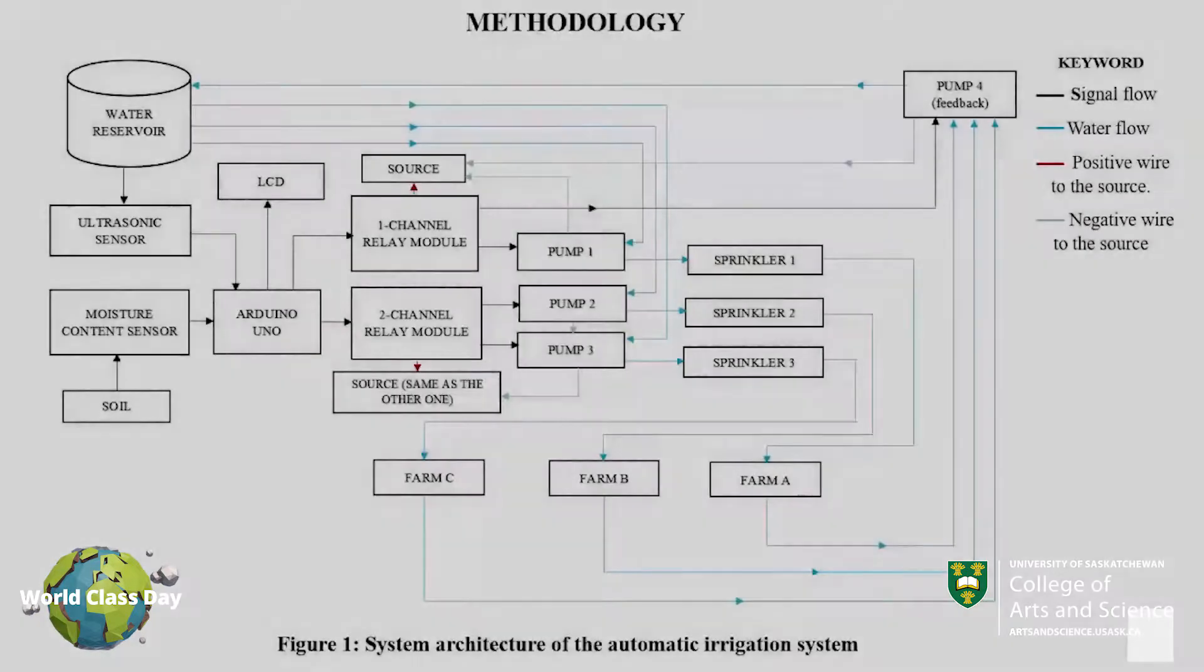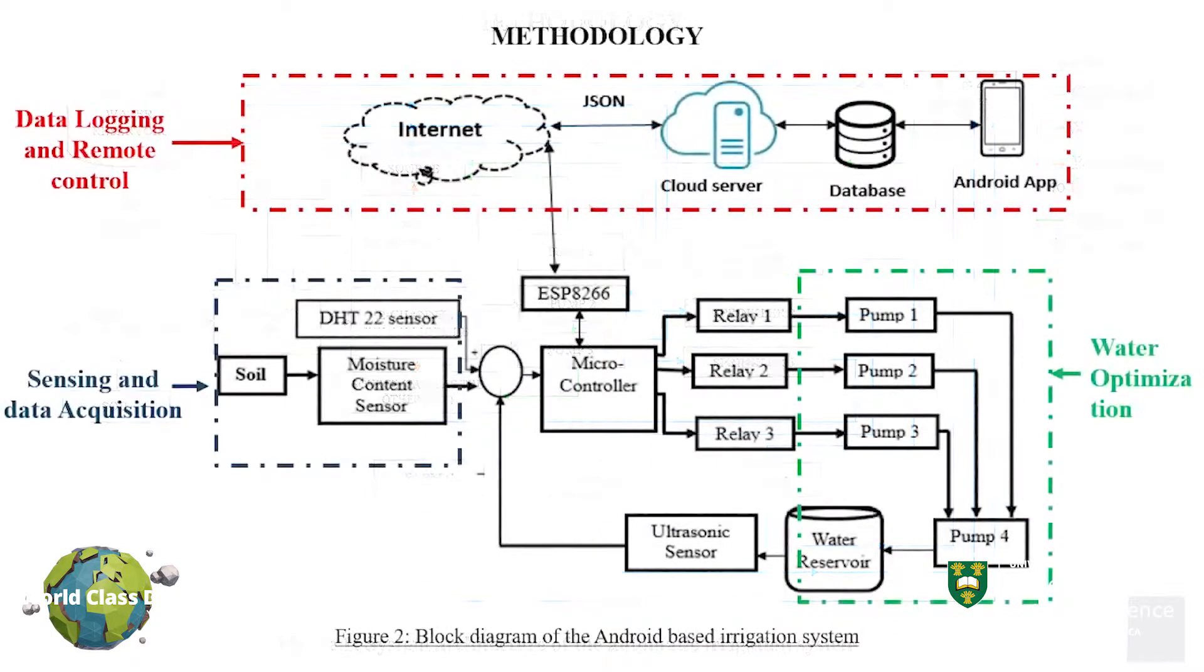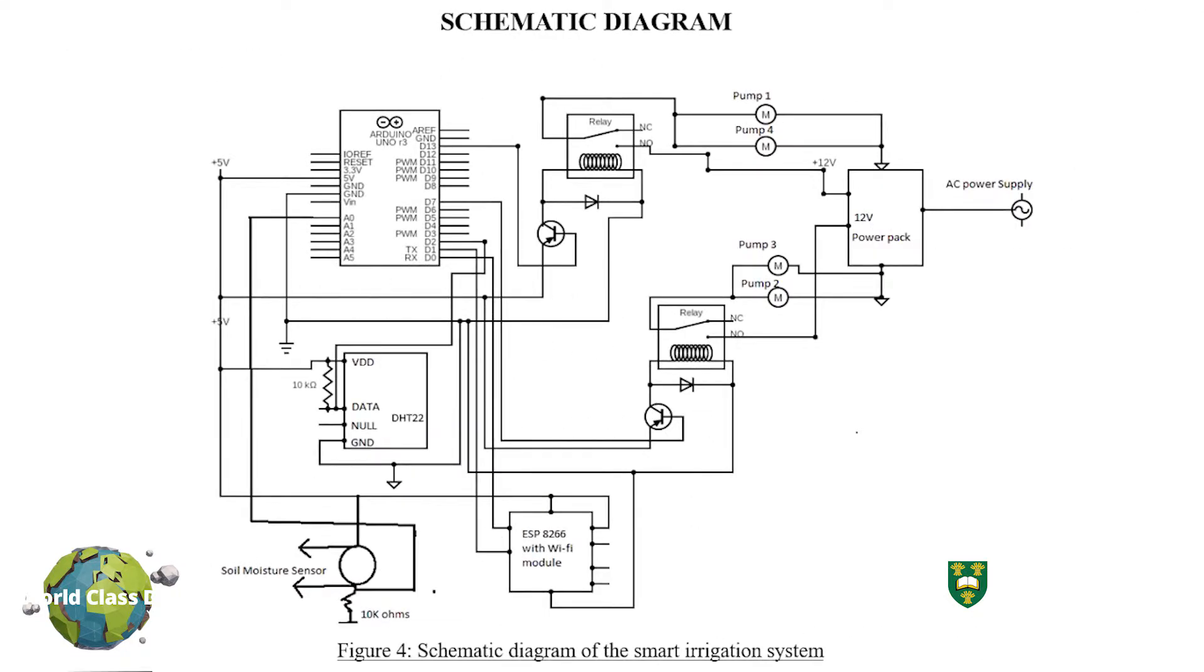The methodology discusses the procedure, technique, tools used in the implementation of this project and how the system components interact with each other. The flow chart of the system describes the flow of activities that takes place in the system. It displays the steps taken by the system to perform its operation.